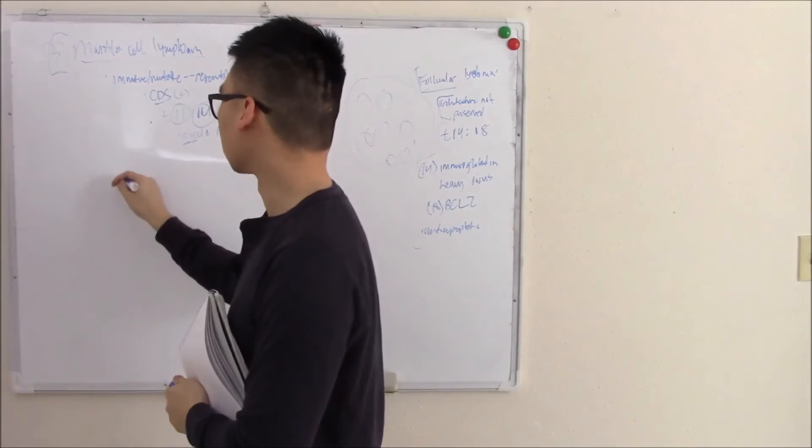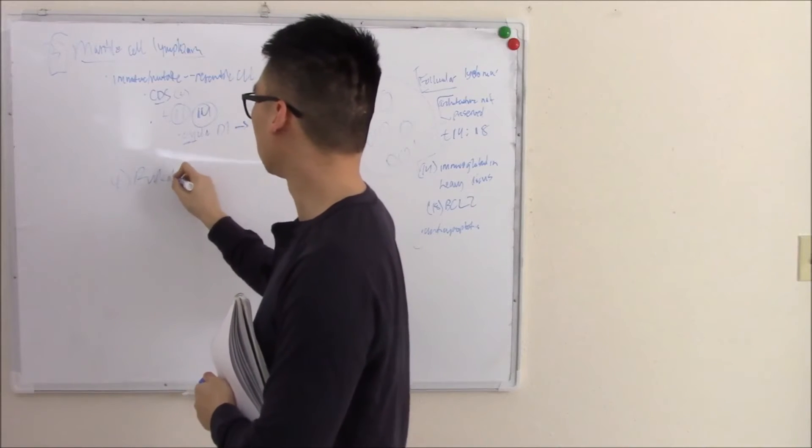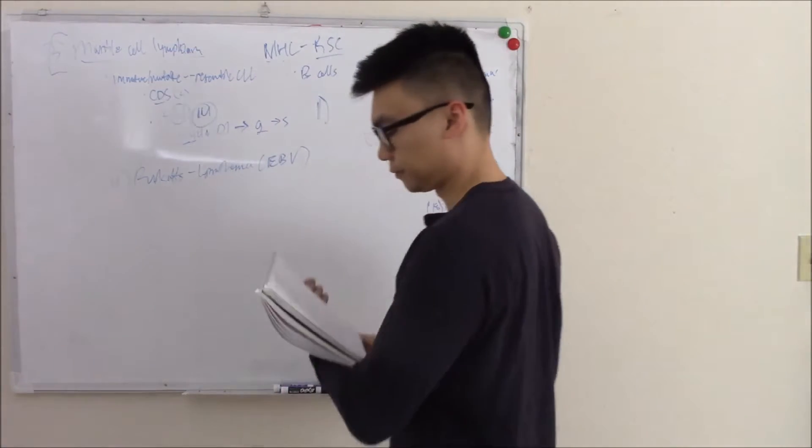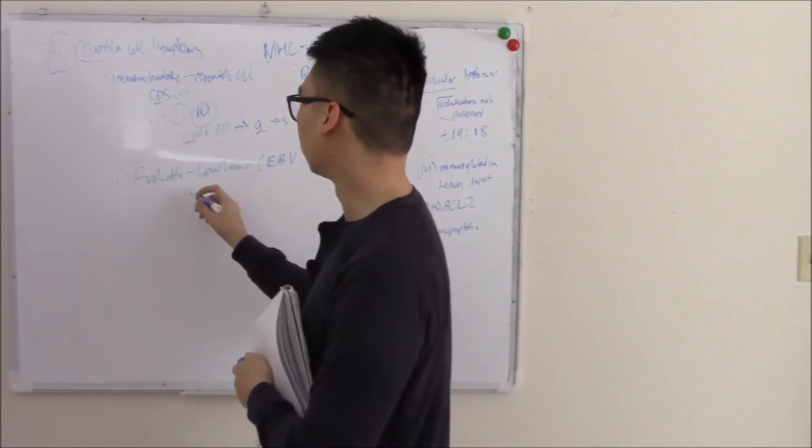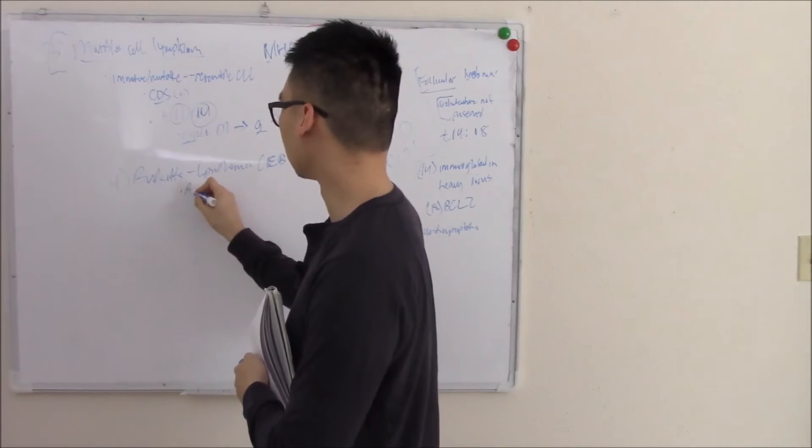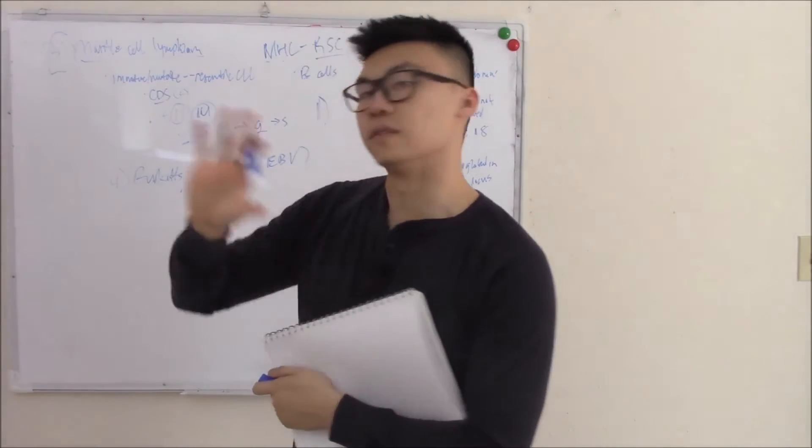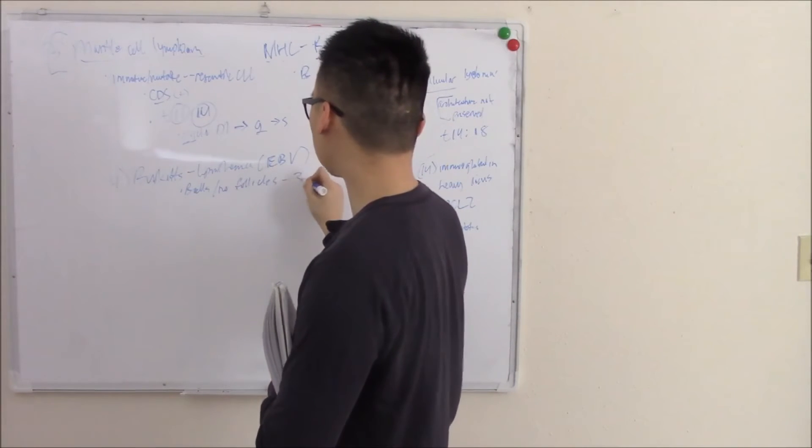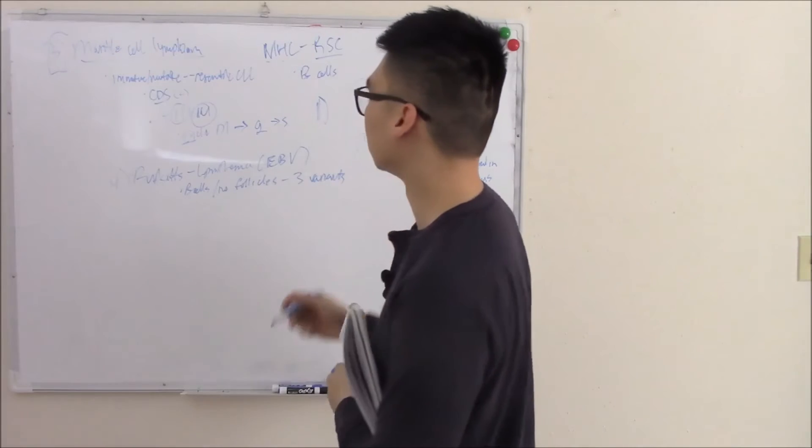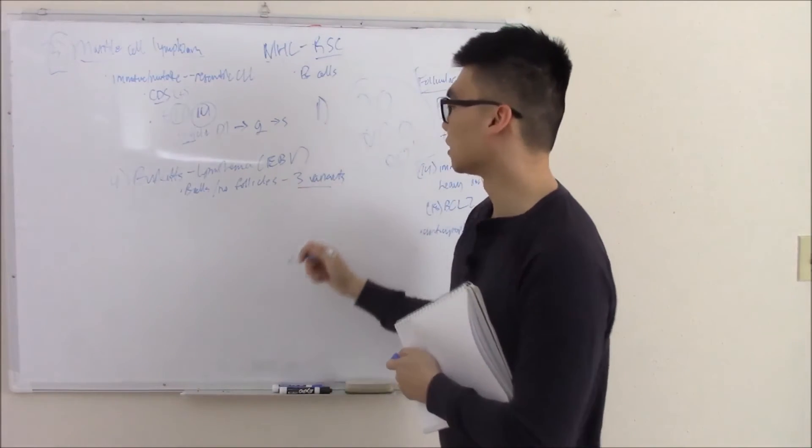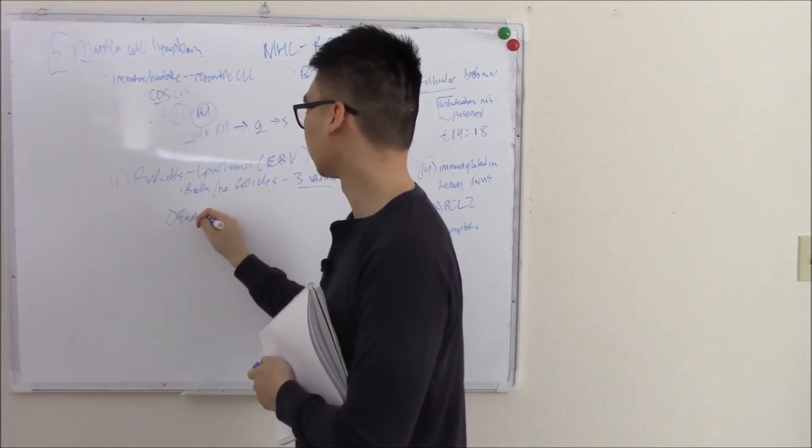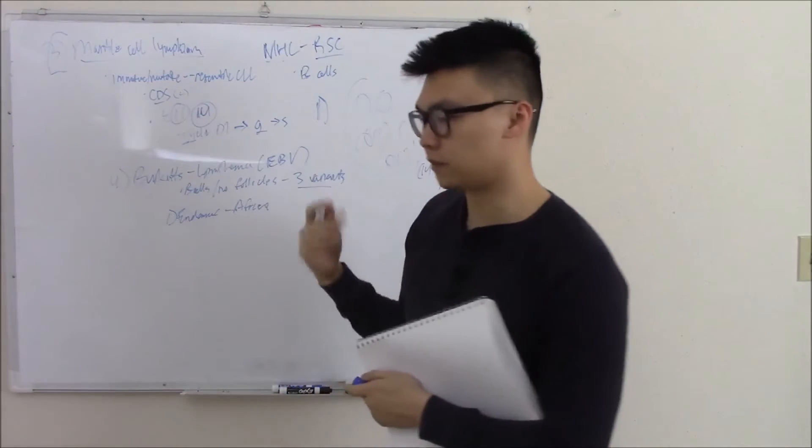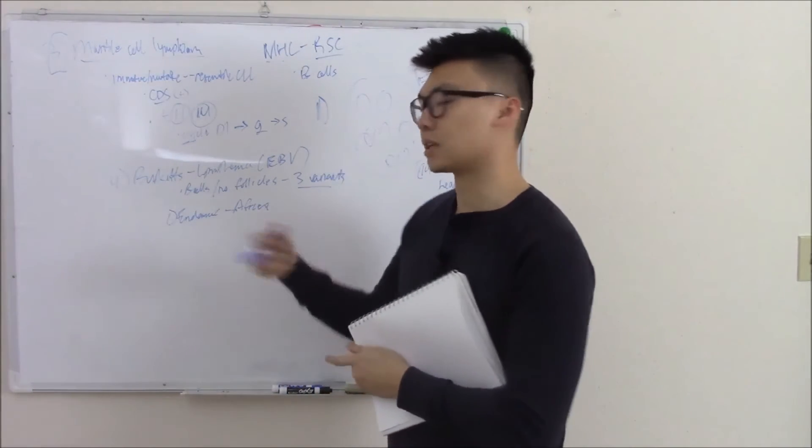Next up is Burkitt's. Burkitt's is perhaps the most famous. Burkitt's lymphoma is highly associated with EBV. This is similar to diffuse large B cell lymphoma. So it's a cancer of your B cells and it's diffuse, lacking follicles. What separates it is that there are three distinct variants. There's an endemic variant seen in Africa. They call it endemic because it's one of the most common causes of lymphoma in particular regions of Africa.